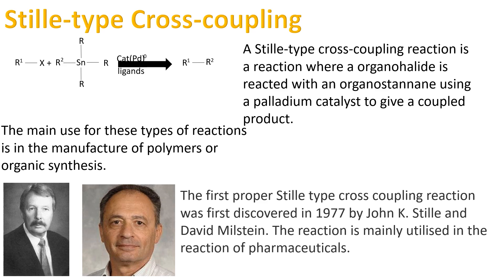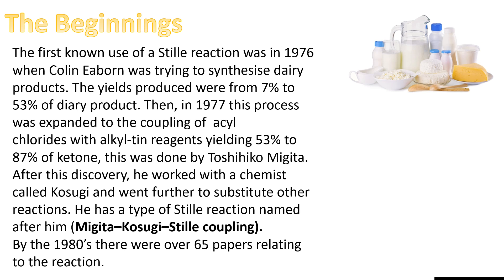Now I'm going to talk a bit about where this reaction comes from — its history and where it is today. The first known use of a Stille-type reaction was in 1976, when a chemist called Colin Eaborn was trying to synthesize diaryl products. The yields produced were from 7 to 53 percent of the desired product. Then in 1977, this process was further expanded to the coupling of acyl chlorides with alkyl tin reagents, yielding 53 to 87 percent of the desired ketone product.